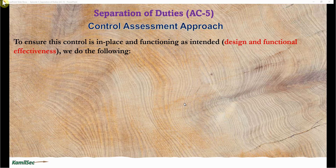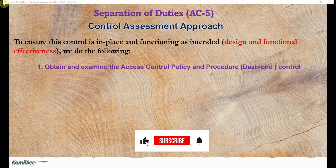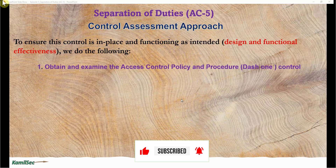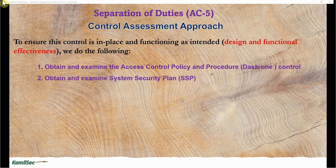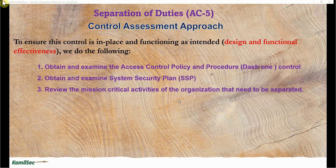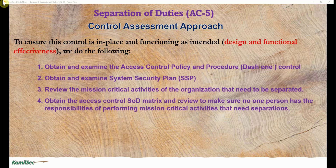Now let's look at the control assessment approach for AC-5. To ensure this control is in place and functioning as intended — both design and functional effectiveness — we do the following. First, obtain and examine the access control policy and procedure, the dash-one control. Second, obtain and examine the System Security Plan (SSP) to understand the implementation statement of this control. Third, review the mission-critical activities of the organization that need to be separated. Fourth, obtain the access control SOD matrix and review it to ensure no single person has the responsibility of performing a mission-critical activity requiring separation.